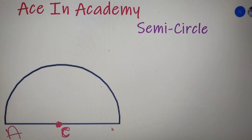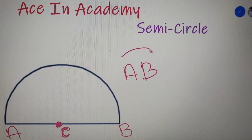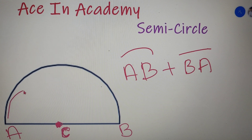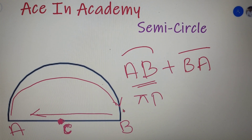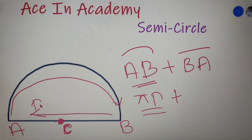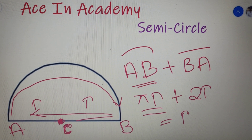If I name the endpoints of the semicircle as A and B, then the perimeter of the semicircle is the distance traveled from A to B along the arc, plus the distance traveled from B to A along the base. The arc distance from A to B equals πr, because the full circle perimeter is 2πr and the semicircle arc is half of that — so 2πr divided by 2 equals πr. The base distance BA equals 2r, since from A to C is r and from C to B is r. So the perimeter equals r(π + 2).